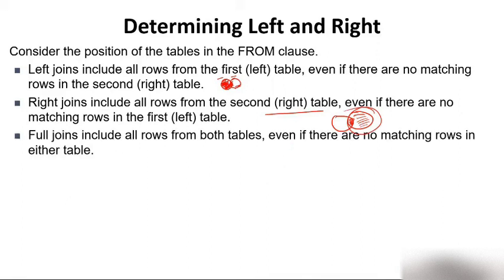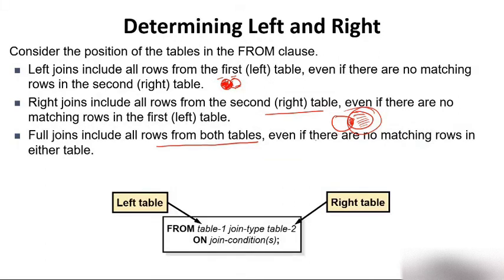Full join includes all rows from both tables, even if there are no matching rows in either table. If I write the query as FROM table1 JOIN TYPE JOIN table2, then table1 is the left table and table2 is the right table, followed by the ON clause.